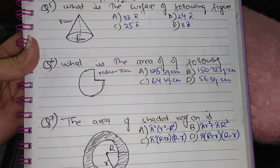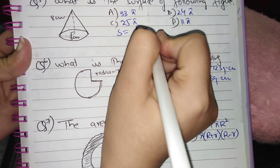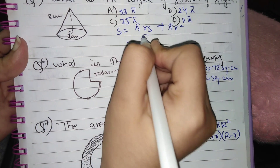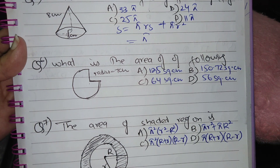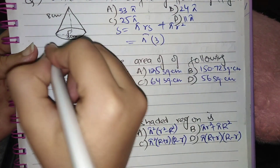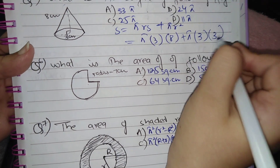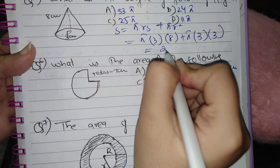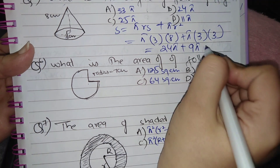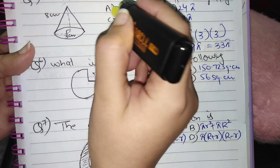Question 5: Find the surface area of the following figure. The surface formula is given as πrs + πrs + πr², where r = 3 and s = 8. After substituting and simplifying the terms, the result is 33π. The correct option is option A.